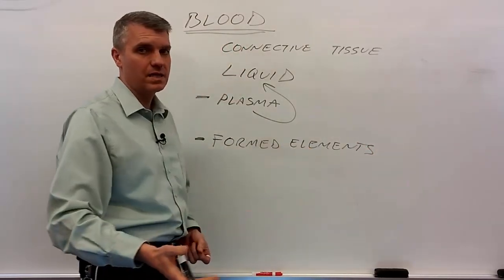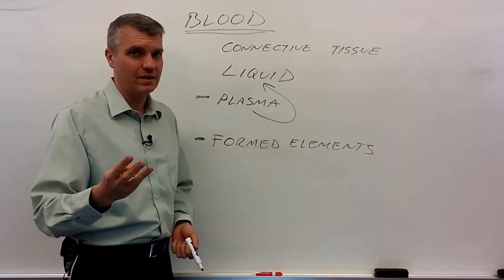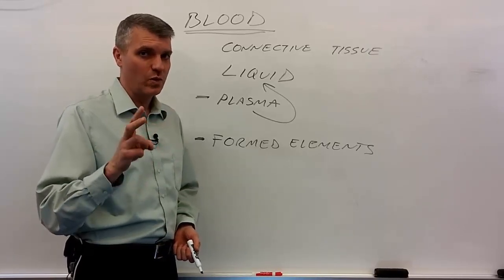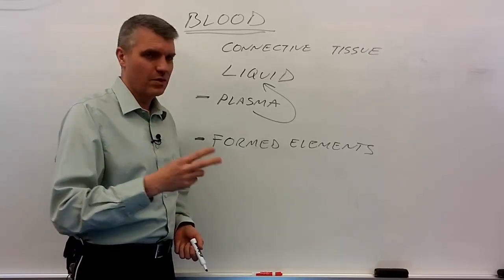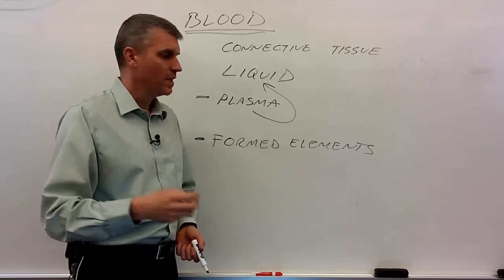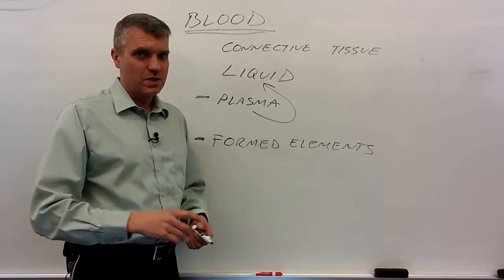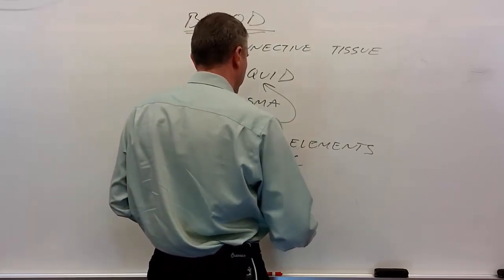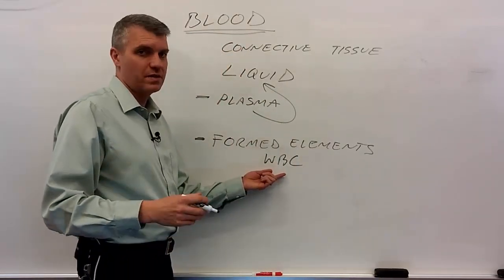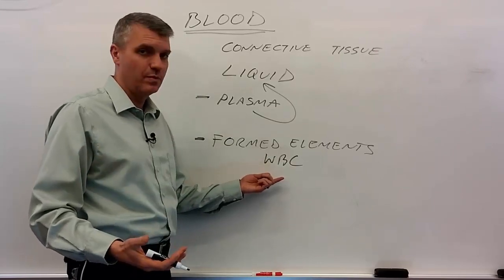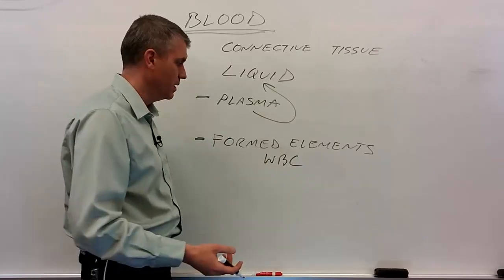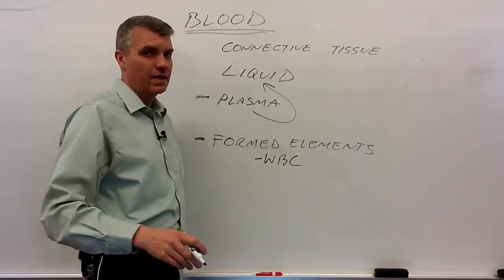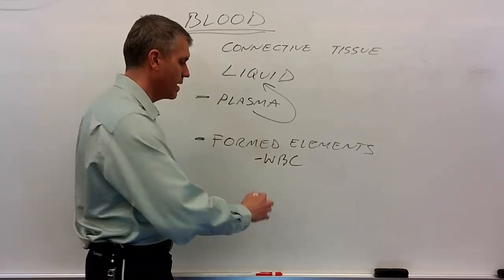Formed elements are like the cells in blood. There are three formed elements. Two of them are actually called cells: red blood cells and white blood cells, and then the third one is platelets. Only one of them is a true cell — the white blood cell — because they have a nucleus and are capable of cellular reproduction. At least the majority of them are, and because they have a nucleus they can replace their parts.